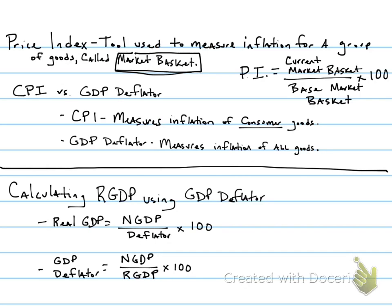Going back to our previous notes from last video, a price index is calculated by taking the current market basket value, dividing it by a base market basket value — so you're taking the current value of that group of goods divided by the base value of that group of goods, times 100. That gives you the price index value. A price index doesn't use any units; it's not a dollar value. It just puts the value of that group of goods into like terms, and we can use that value to measure the inflation rate between any two price index values.